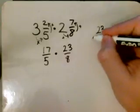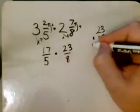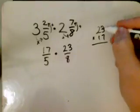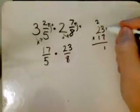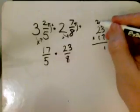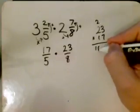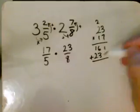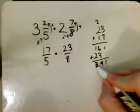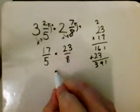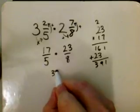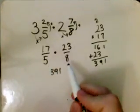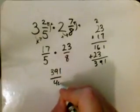So 23 times 17. Alright, 7 times 3 is 21, carry the 2. 7 times 2 is 14, plus 2 is 16. And then 1 times 23 is just 23. So you add those together. 1, 9, 3. So on the top, I have 391. And then 5 times 8 is 40.